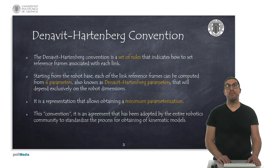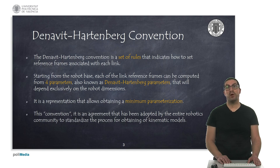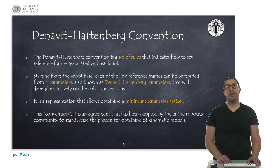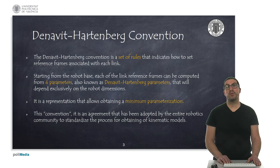The Denavit-Hartenberg Convention is nothing more than a set of rules that allow us to associate reference frames to each of the robot links regardless of the geometry of the link. We can apply this convention to robots with revolute or prismatic type joints, but other joint types such as cylindrical or spherical can also be used since they can be seen as a composition of previously mentioned joints. Starting from the robot base, we will compute reference frames for each link and obtain four parameters per transformation, exclusively depending on robot dimensions. This is a minimum parametrization and has been adopted as a convention by the robotic community to standardize the process of obtaining kinematic models.